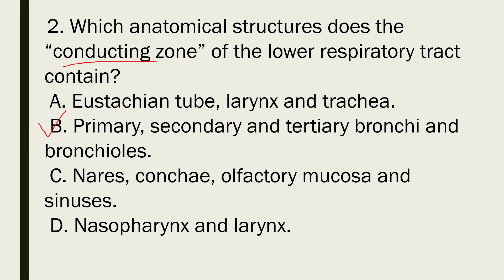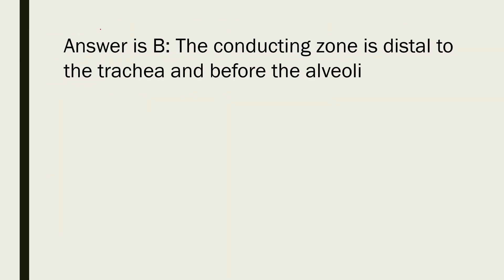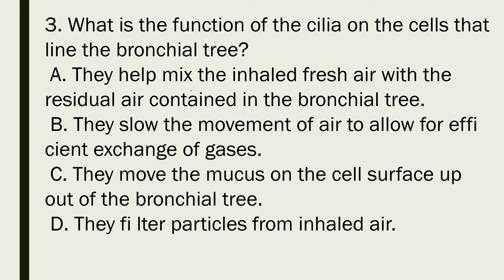The conducting zone of the lower respiratory tract consists of primary, secondary, and tertiary bronchia and bronchioles, distal to the trachea and before the alveolar. The alveolar belongs to the respiratory zone, not the conducting zone. Correct option is option B.